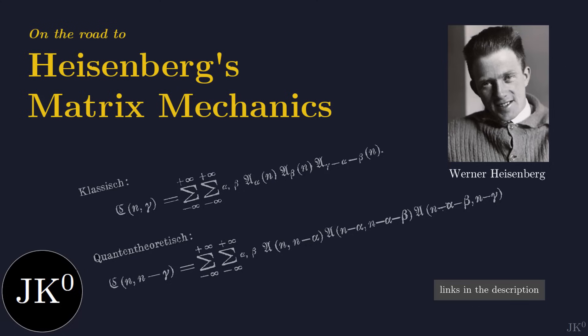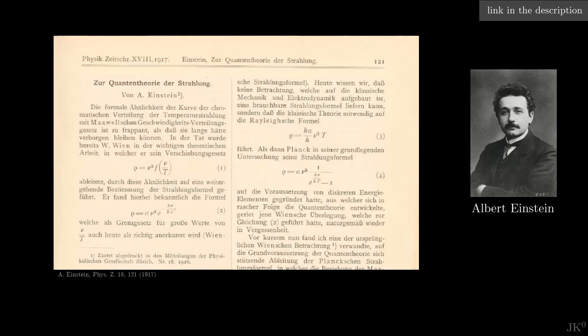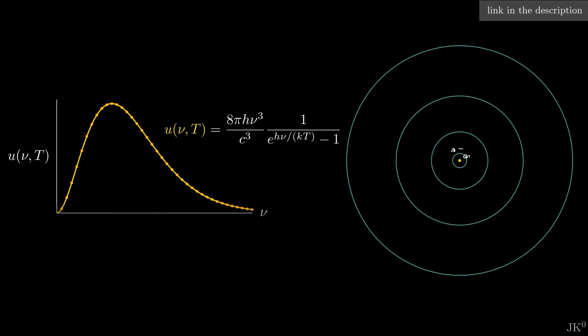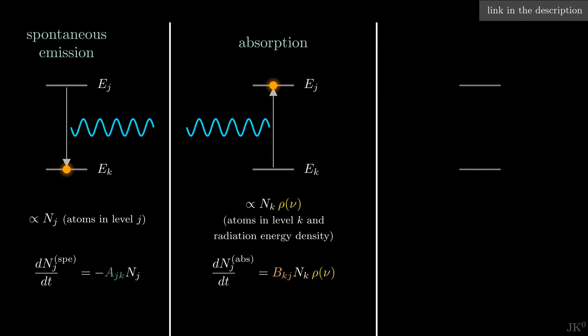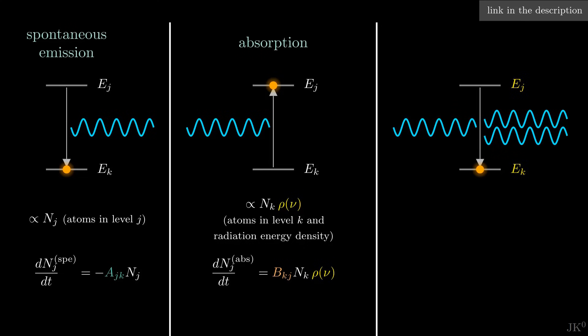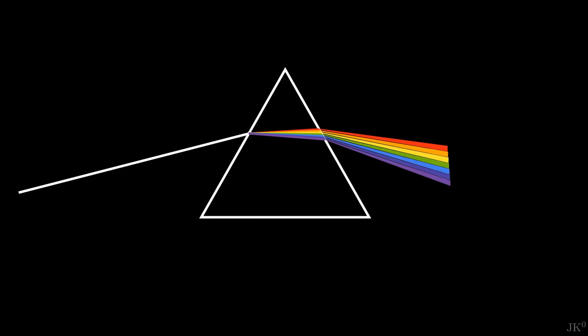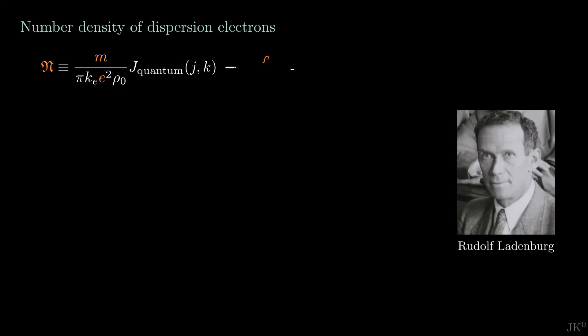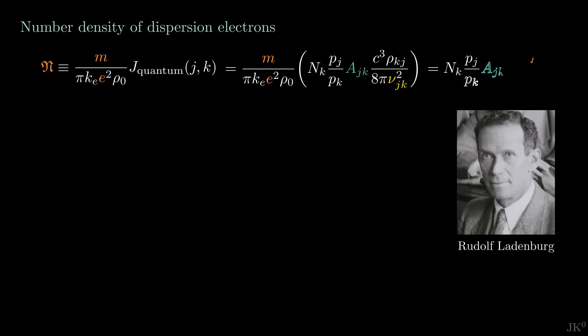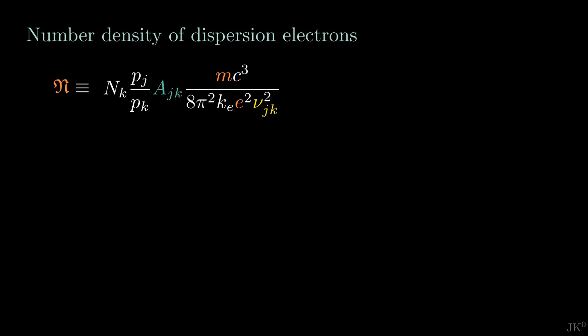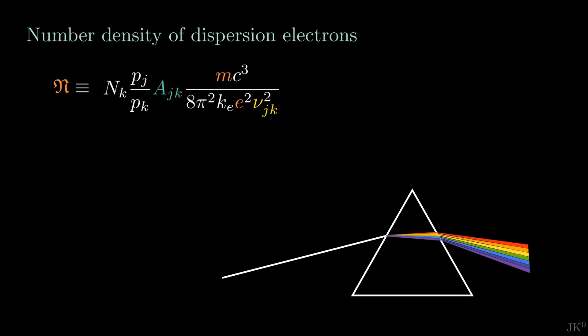This video is part of my series on the road to Heisenberg's matrix formulation of quantum mechanics. Make sure to check the previous videos for context. To summarize: in previous videos I showed how Einstein introduced probabilities and discovered that forcing Planck's radiation law to be consistent with Bohr's atomic model requires stimulated emission, the basis of the laser. Then I presented the classical theory of dispersion, and last time how Rudolf Ladenburg proposed a quantum version of dispersion. This is the formula found by Ladenburg for the density of resonant electrons producing dispersion of light.